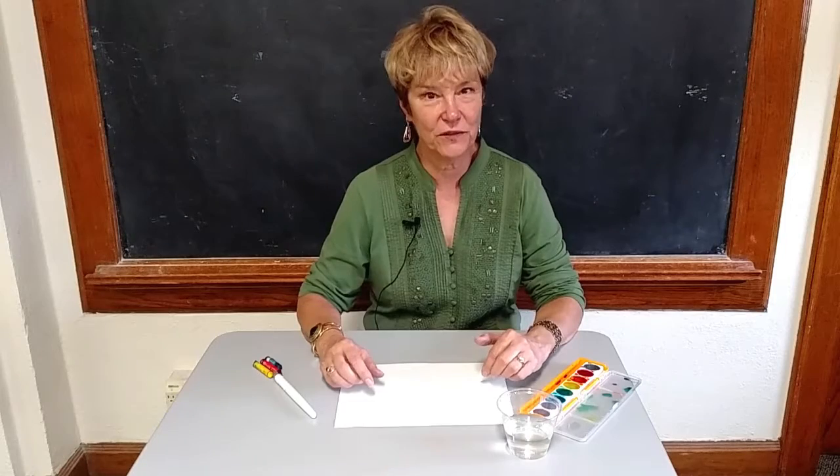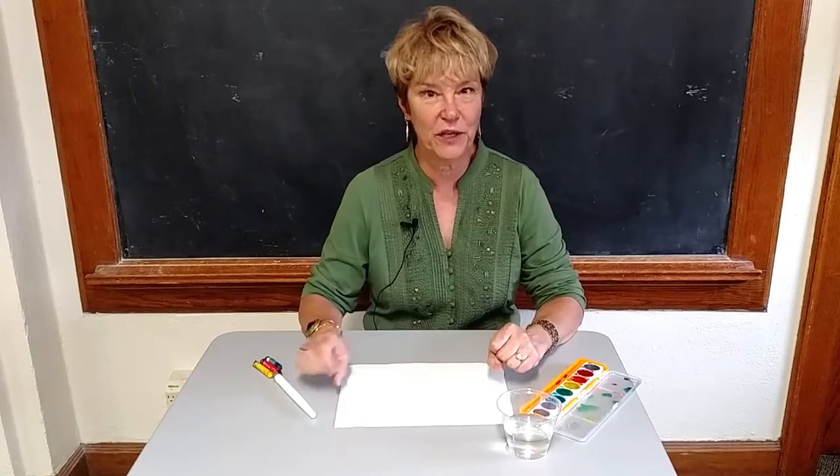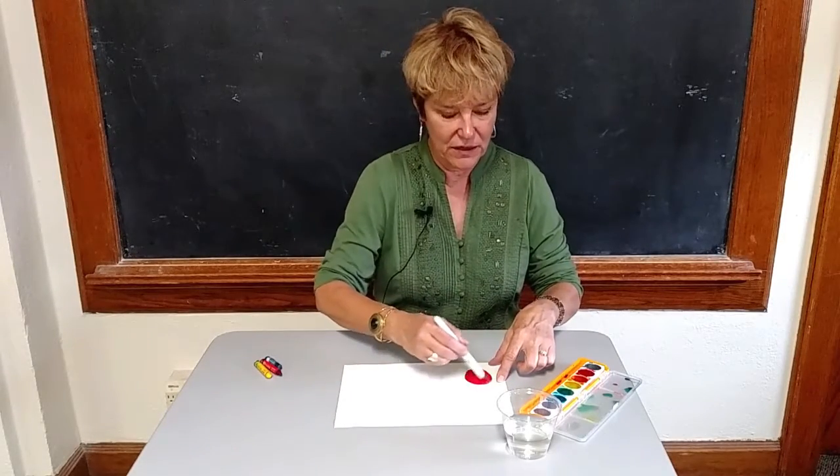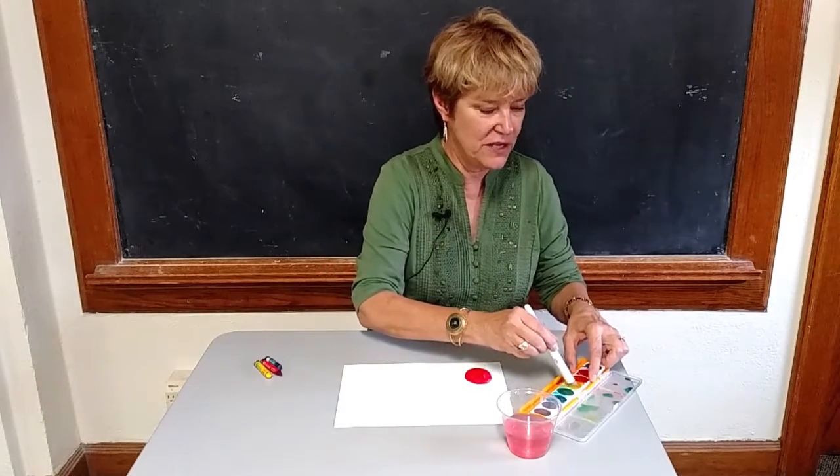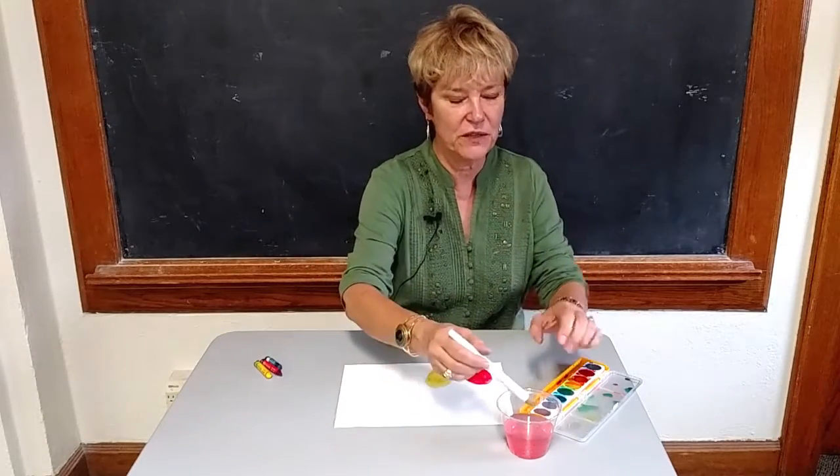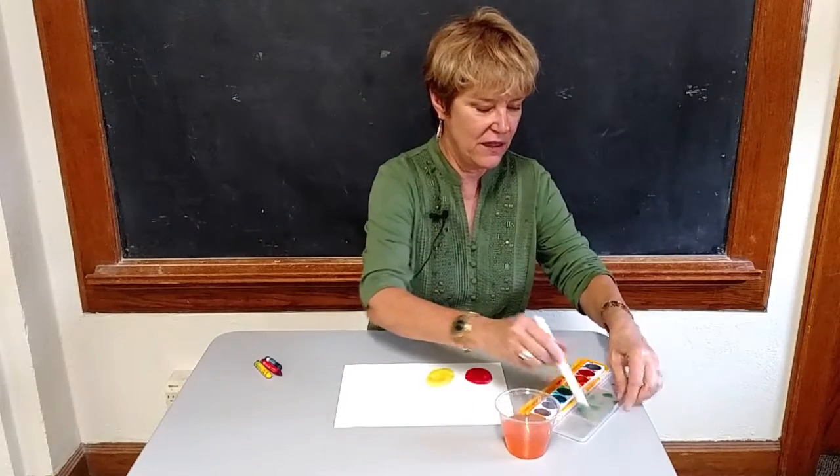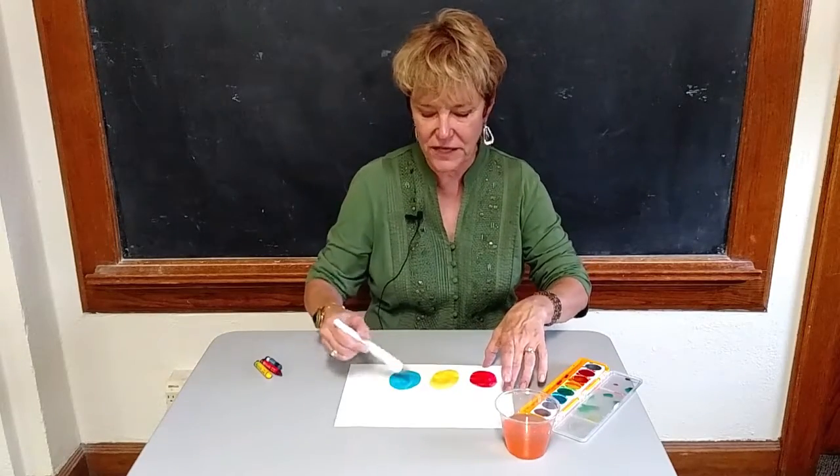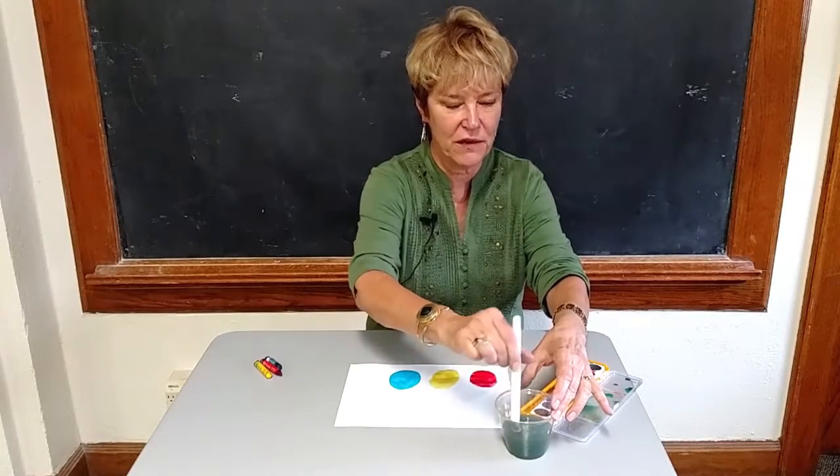So one of the first things I do with the children is emphasize that all colors in the world come from three primary colors, which are red. And I have the children make a spot of red. And then I have them make some yellow. And what's really fun is as you put the paintbrush in the cup, the kids can observe how the water changes color as well. And then they make some blue. Again, emphasizing that these are the primary colors and all colors come from these three main colors.